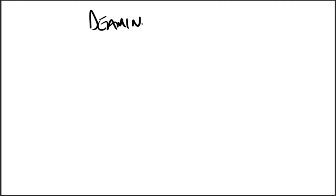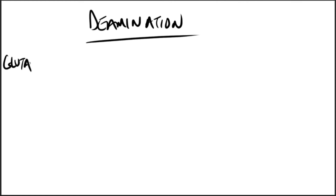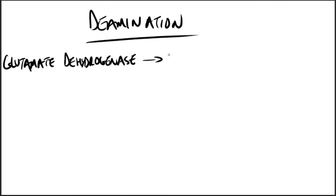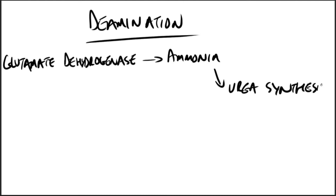Moving on to deamination: in contrast to transamination reactions that transfer amino groups, oxidative deamination by glutamate dehydrogenase results in the liberation of the amino group as free ammonia. These reactions occur primarily in the liver and kidney. They provide alpha-keto acids that can enter the central pathway of energy metabolism, and ammonia, which is a source of nitrogen in urea synthesis.